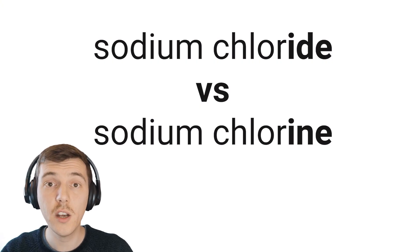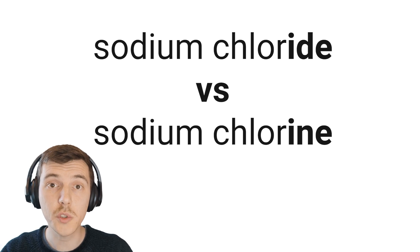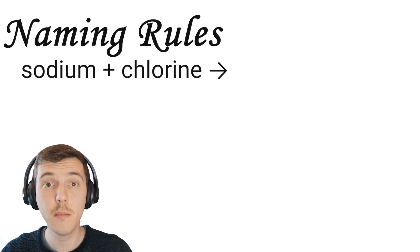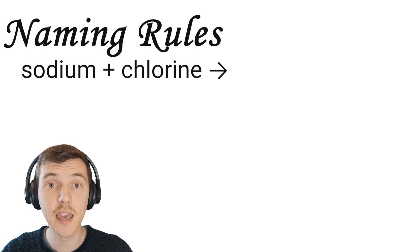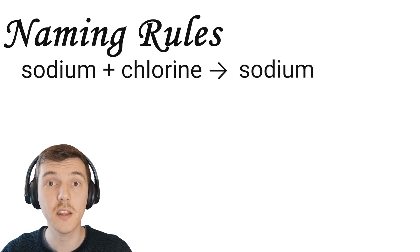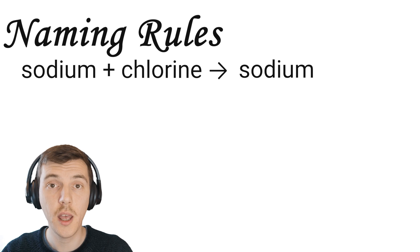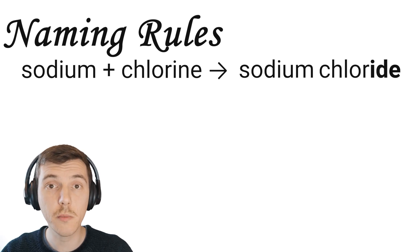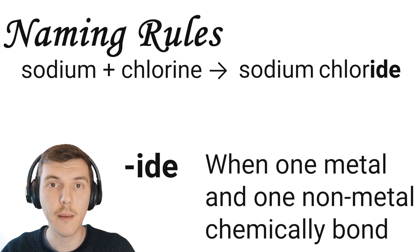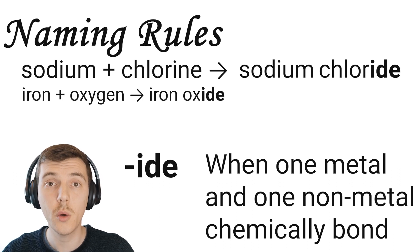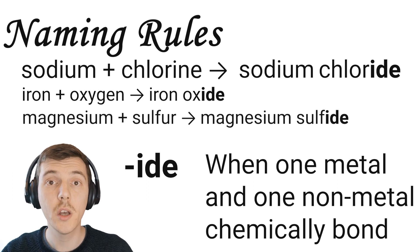So why is it sodium chloride, and not sodium chlorine? Well, there are two rules that you need to know about when it comes to naming compounds. When a metal and a non-metal come together, the name of the compound combines both of the two elements together. The first part of the name will contain the metal, and that remains unchanged. However, the second part of the name is the non-metal, but we slightly alter the name of that non-metal to include the ending '-ide'. So when sodium and chlorine react together, we make something called sodium chloride. When iron and oxygen react together, we make iron oxide. And when we react magnesium and sulfur together, we get magnesium sulfide.